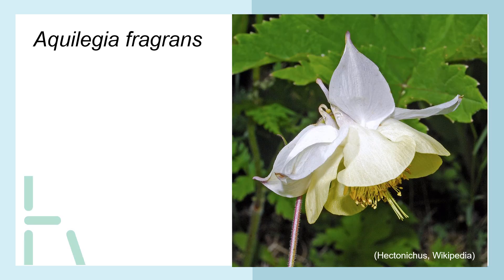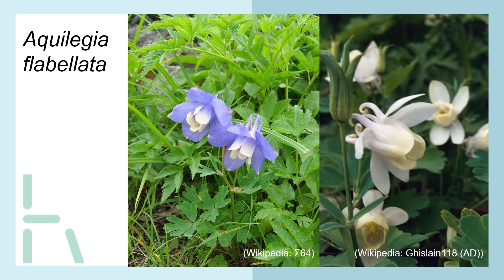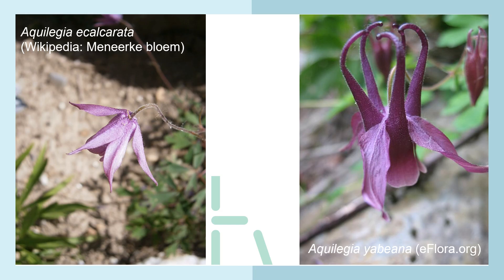Let's have a look at how they look. This is now Fragrance. This is Fabelata — as you can see, there are different color variations of it. And this is Ecalcarata. To the left and to the right is Yabeana. So, quite similar to each other, but Ecalcarata doesn't have the spurs, whereas Yabeana have very long spurs.